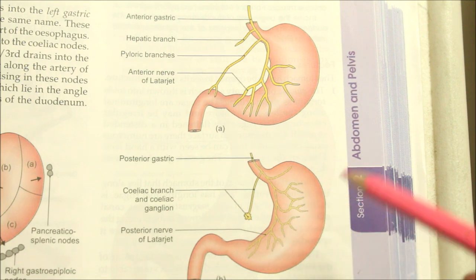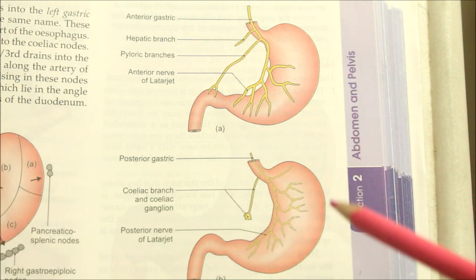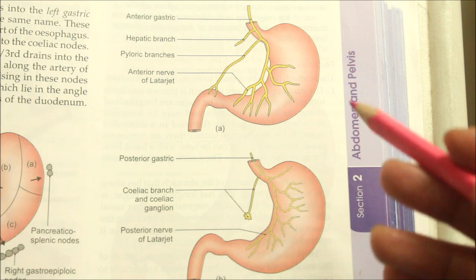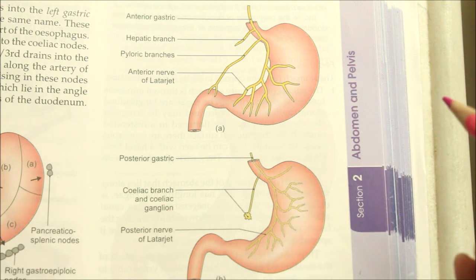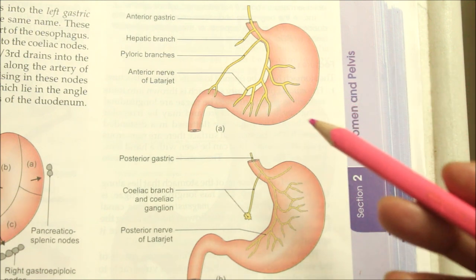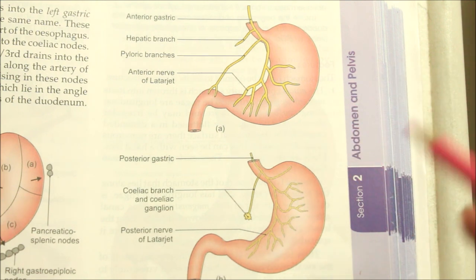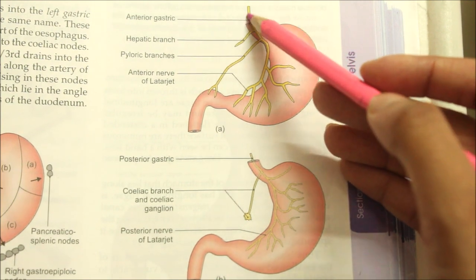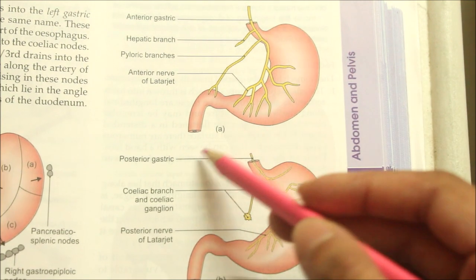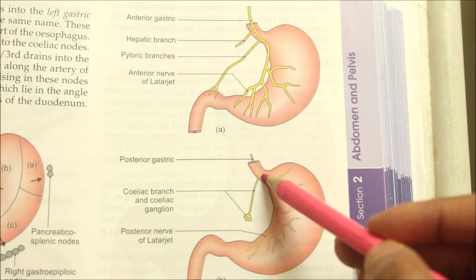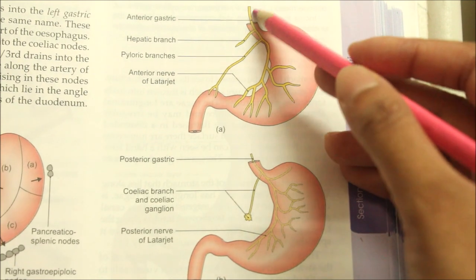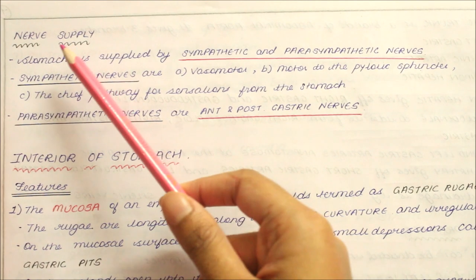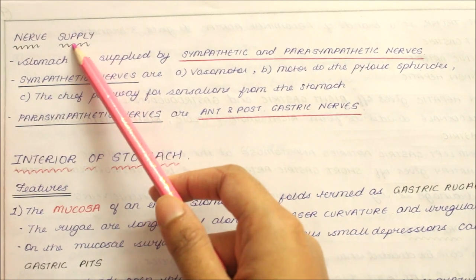The stomach is supplied by sympathetic and parasympathetic nerves. The sympathetic nerves are vasomotor nerves and motor to the pyloric sphincter, whereas the parasympathetic nerves are the anterior gastric nerve and the posterior gastric nerve.